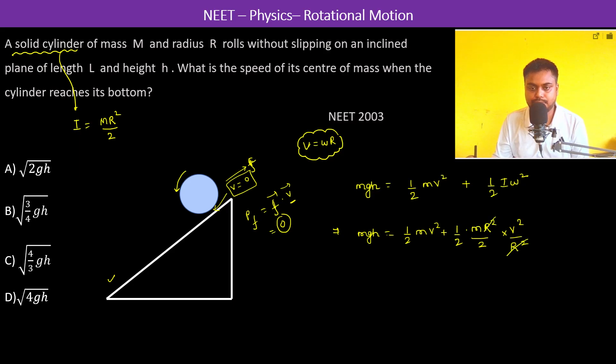Therefore, gh is equal to v square by 2 plus v square by 4 which is equal to 3 by 4 v square.